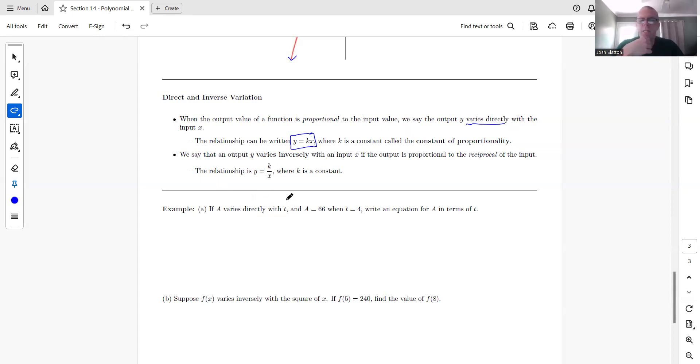So if A varies directly with T, A is 66 when T is 4, write an equation for A in terms of T. So we're going to use this. So K is the constant. And so we really just need to figure out what K is. And so we're just going to plug in the 66 for A and we're going to plug the 4 in for T and then solve for K. So we'll divide both sides by 4 and we get 16.5. And so our function A is 16.5 T and that is it.